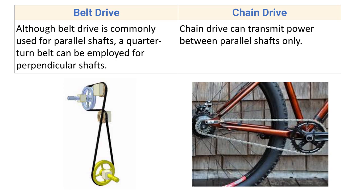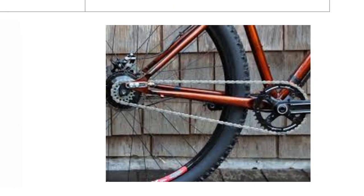Chain drive can transmit power between parallel shafts only. A common example of chain and sprocket arrangement is the bicycle. The chain drive is used when the two shafts are exactly parallel and the two sprockets are perfectly aligned to each other — only then can chain drive be used.